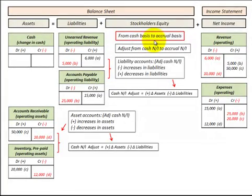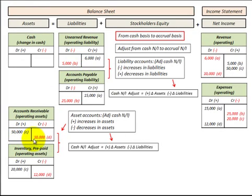We're going to change from a cash basis to an accrual basis, adjusting cash net income to accrual net income. We'll be looking at changes in our liability accounts and changes in our asset accounts that would have to be made to our revenue and expense accounts to convert them from a cash to an accrual basis.